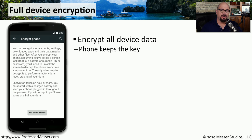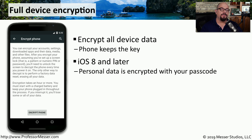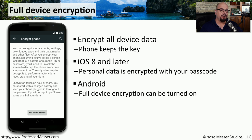We keep a lot of personal information on our mobile devices, so it's important that we keep that data safe. One way to keep it safe is to encrypt all of the data on these mobile phones. In iOS, all of your information is encrypted using your passcode as the encryption key. If someone doesn't have the encryption key, then they don't have access to any of your data. A similar functionality can also be turned on in the Android operating system, where you can encrypt all of the data and make sure everything is safe, no matter where your mobile device might be.